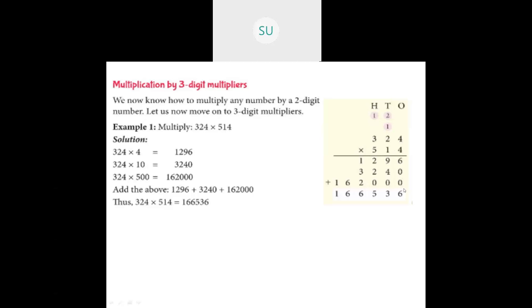Now we add all the results: 1,296 plus 3,240 plus 1,62,000. The answer is 1,66,536.